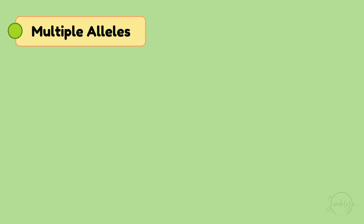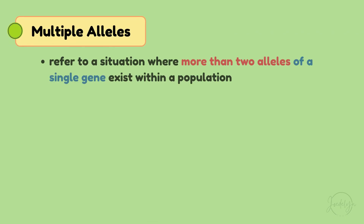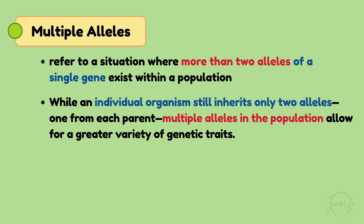Now let's dive into multiple alleles, which refers to a situation where more than two alleles of a single gene exist within a population. While an individual organism still inherits only two alleles — one from each parent — multiple alleles in the population allow for a greater variety of genetic traits.